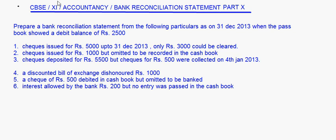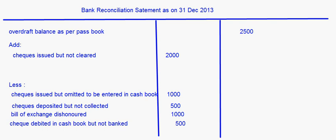Interest allowed by the bank — Rs. 200 — but no entry was made in the cashbook. As per the bank, the overdraft balance comes down, but since no entry has been passed in the cashbook, the cashbook balance is more. So this should be added: Interest allowed — Rs. 200.